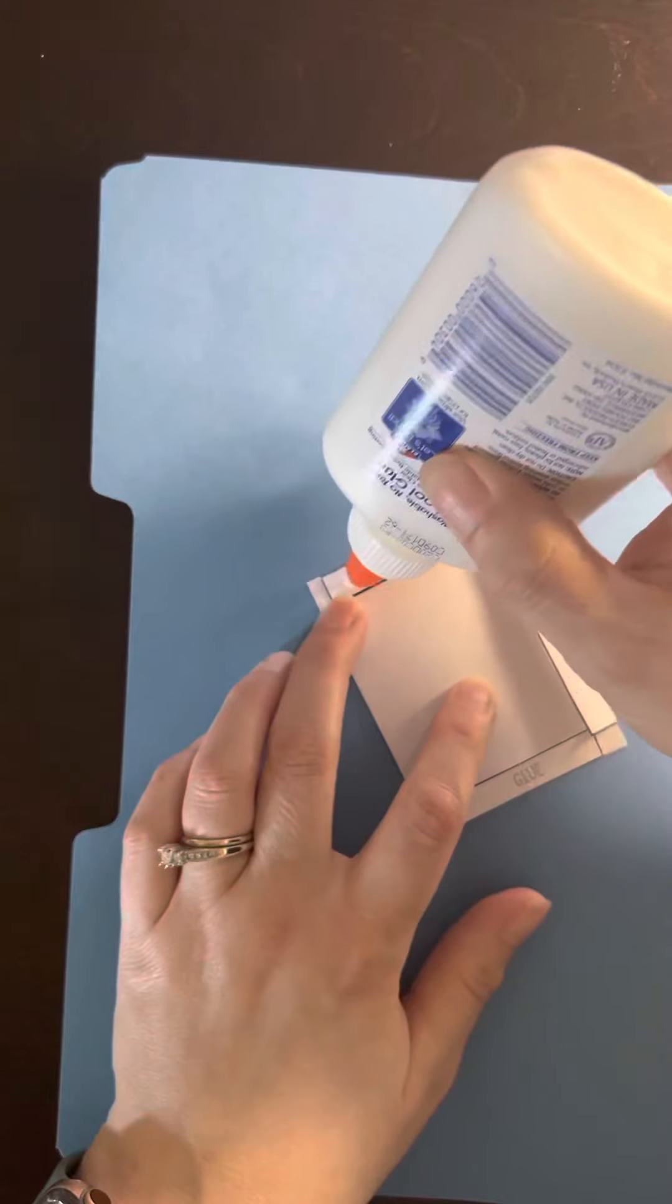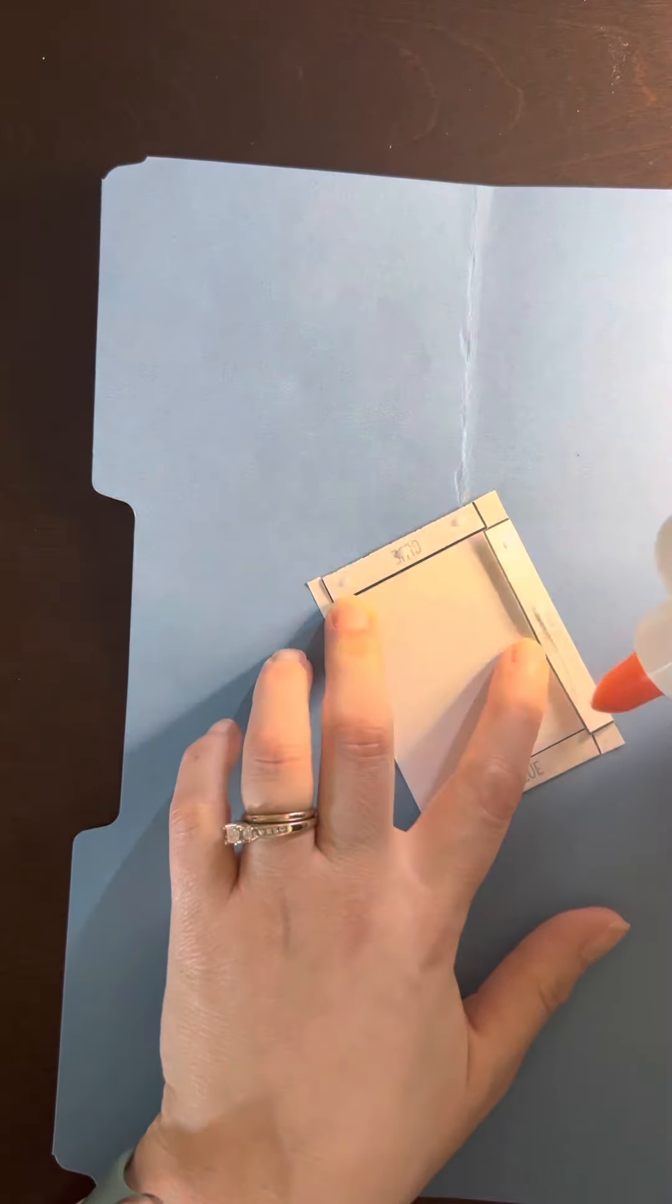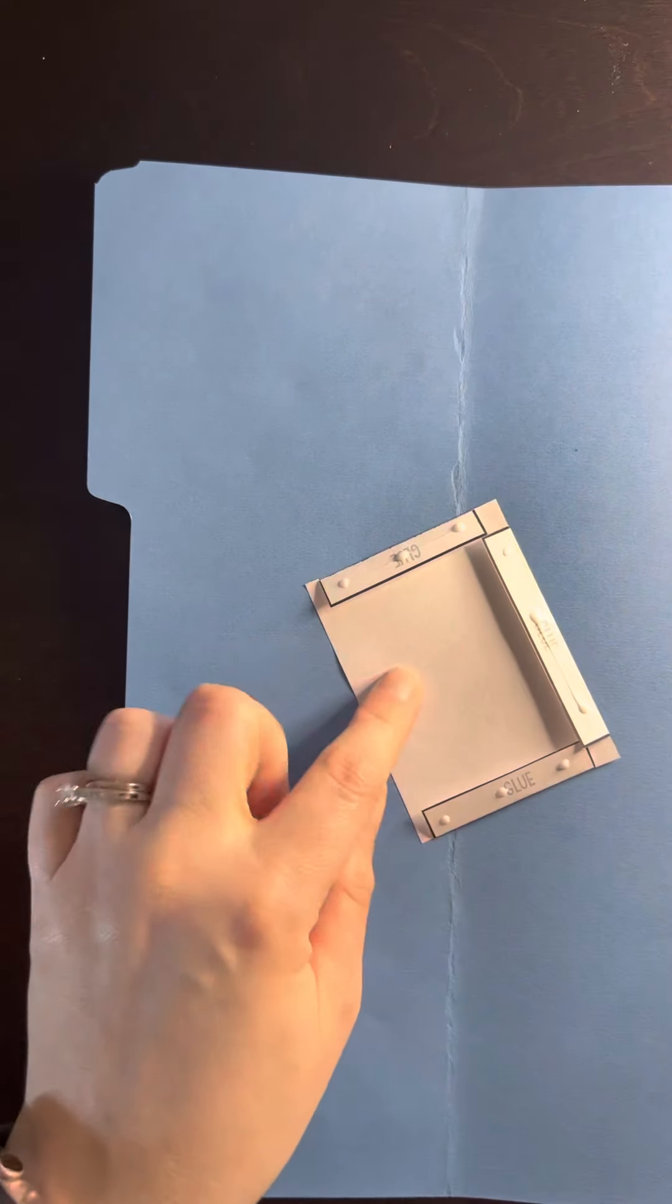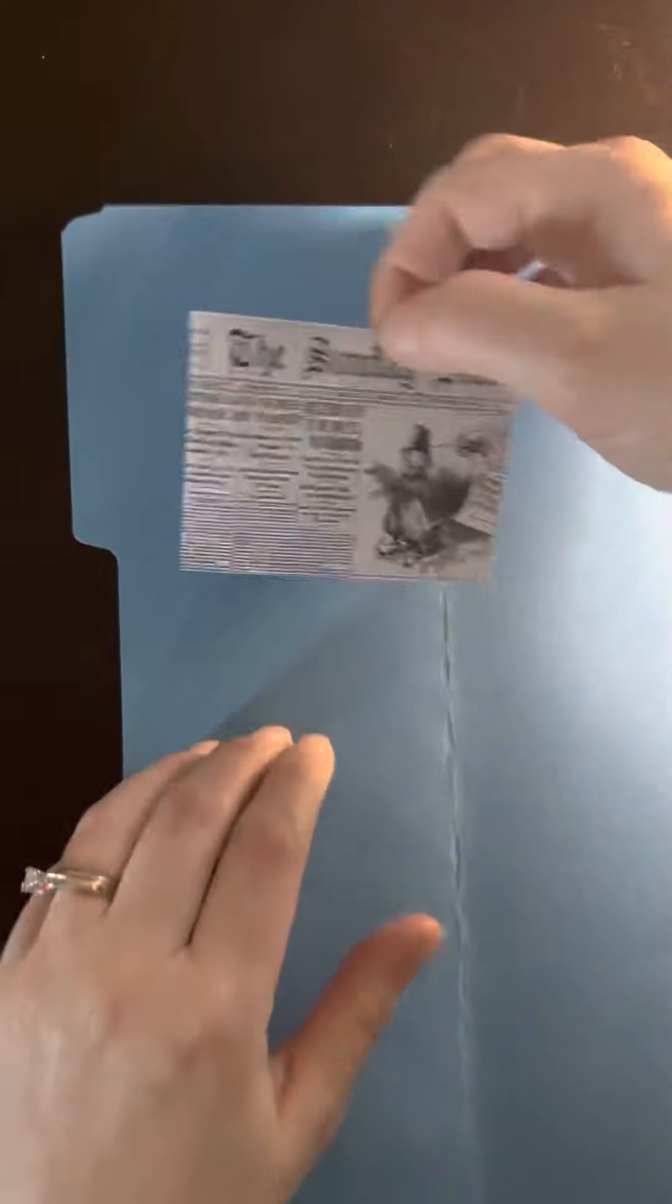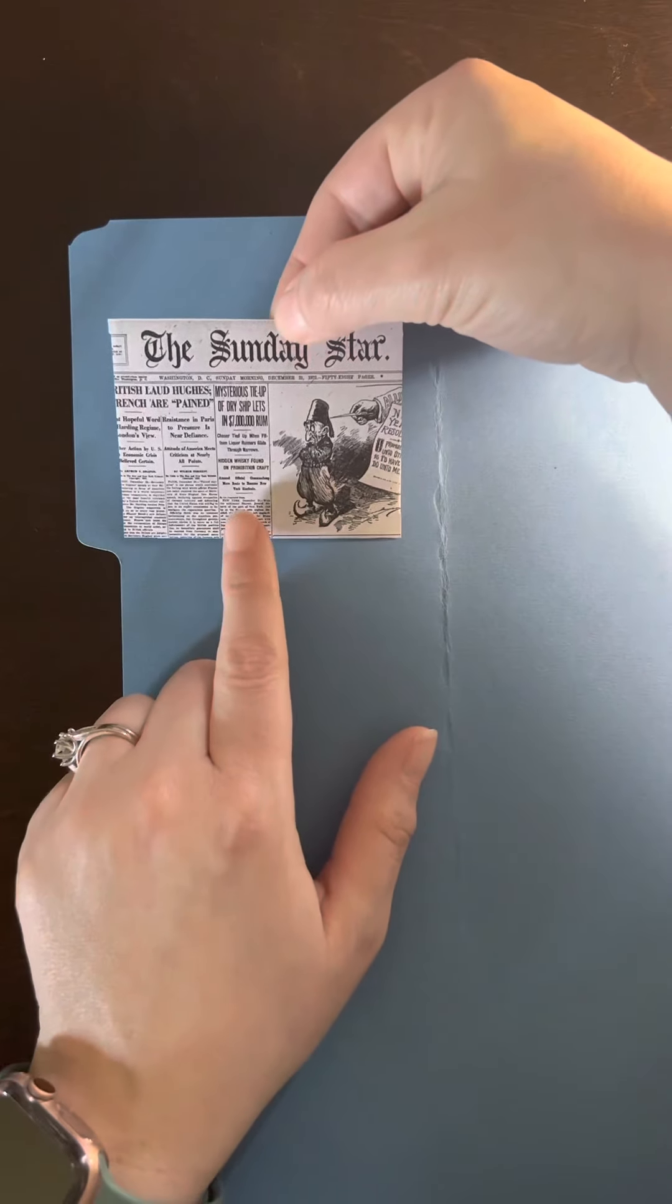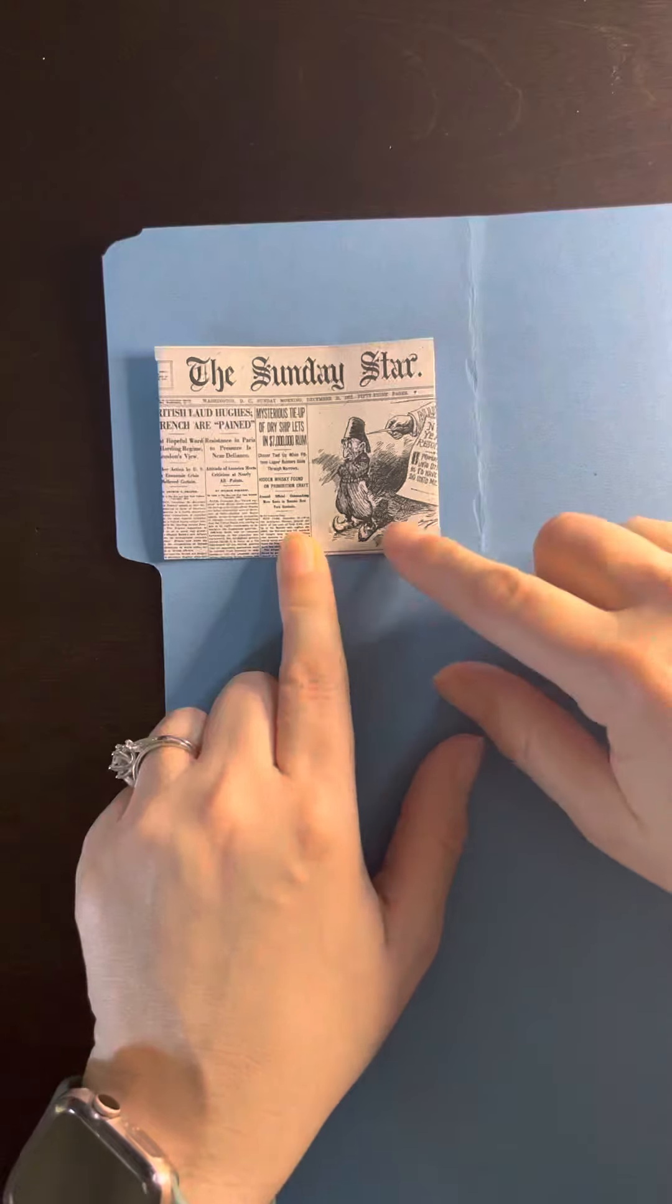we're just going to put three small glue dots on each of these glue tabs. You don't want to put any in the middle here because we're going to make a little pocket for your newspapers to fit into. I'm going to glue this right about here and try to make sure it's centered.